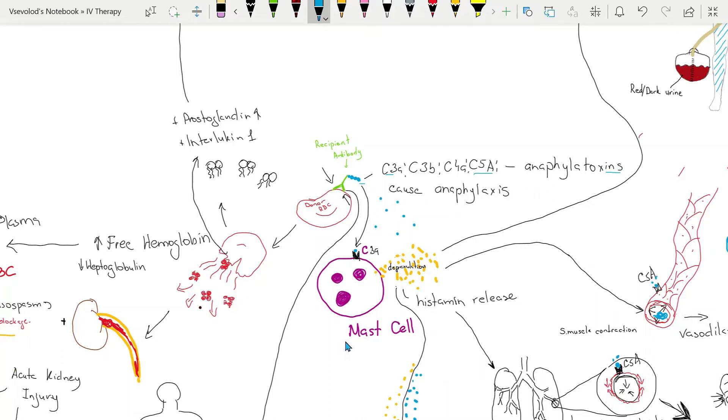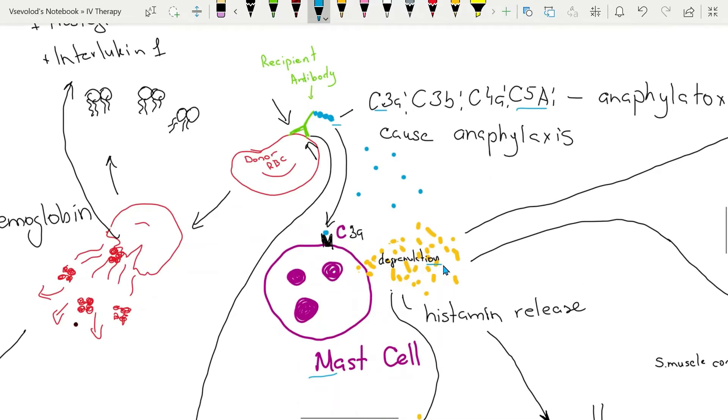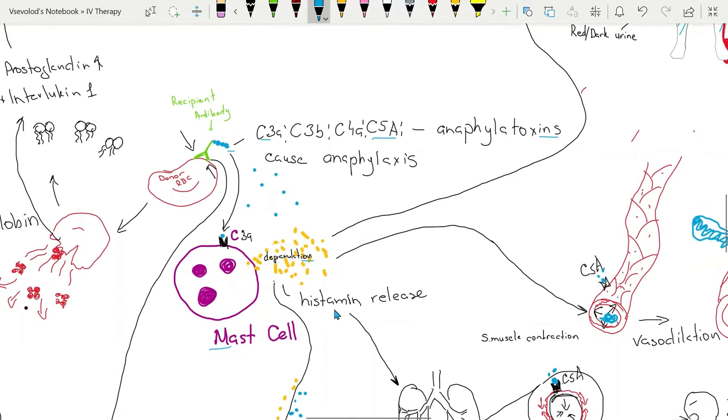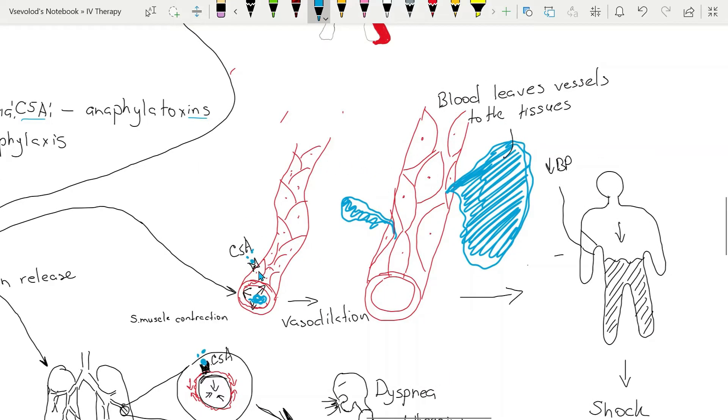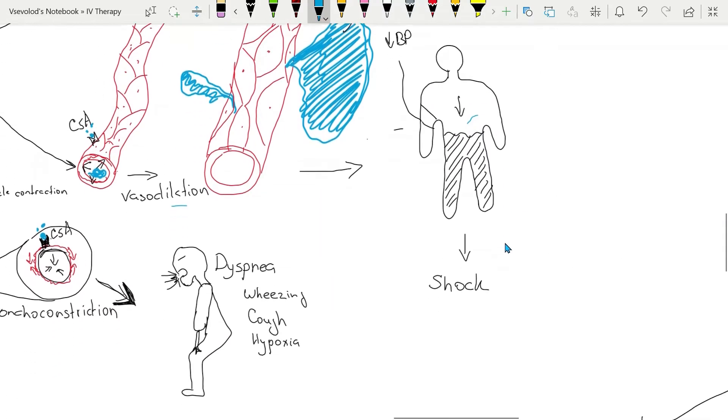They activate mast cells, which are responsible for any allergic reaction. Mast cells have appropriate receptors on their surface to which C5A and C3A complements connect. This will lead to mast cell degranulation, which is release of histamine. Histamine will increase permeability of the blood vessels. Blood vessels will dilate. Blood will go to the tissues and leave the circulation, which will lead to hypotension and possible shock.